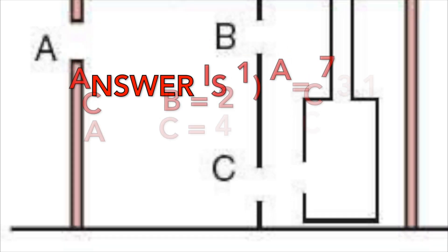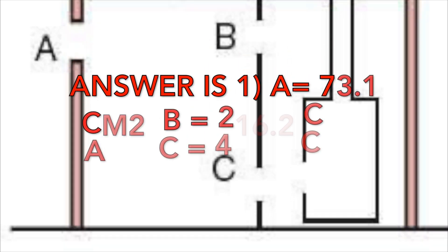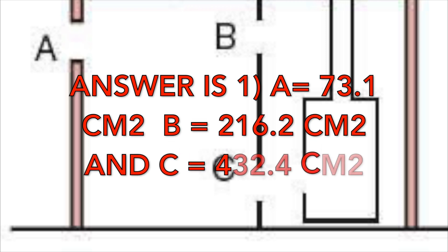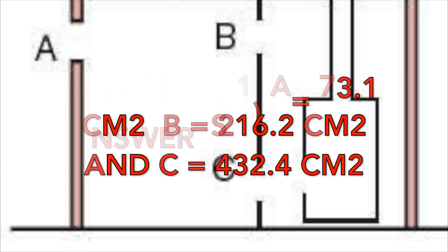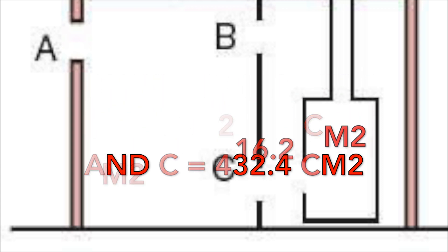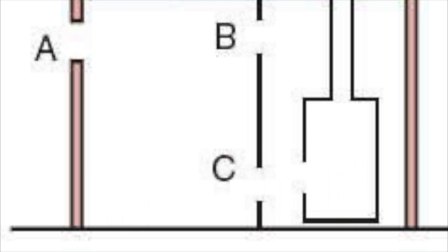The answer is number one: A=73.1 centimeter squared, B=216 centimeter squared, and C=432 centimeter squared. Hopefully you've enjoyed it — I'll catch you on the next one. Cheers!